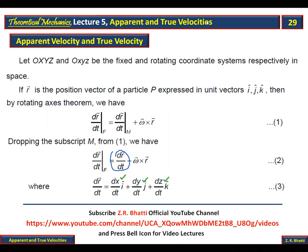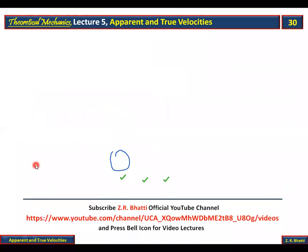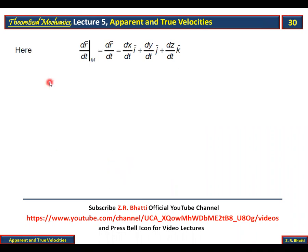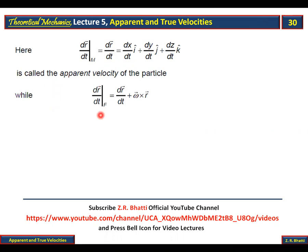This DR/DT in the moving coordinate system is the apparent velocity of the particle, representing the time-rate of change as seen from the rotating system. While DR/DT in the fixed coordinate system is the true velocity of the particle. If you are an observer in the rotating coordinate system, the velocity of the particle will be apparent. If the observer is in the fixed coordinate system, then the velocity of the particle will be the true velocity.